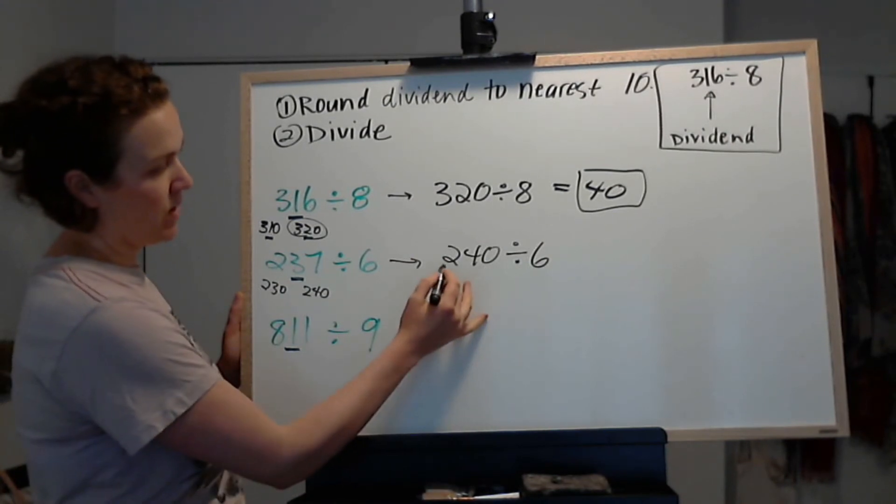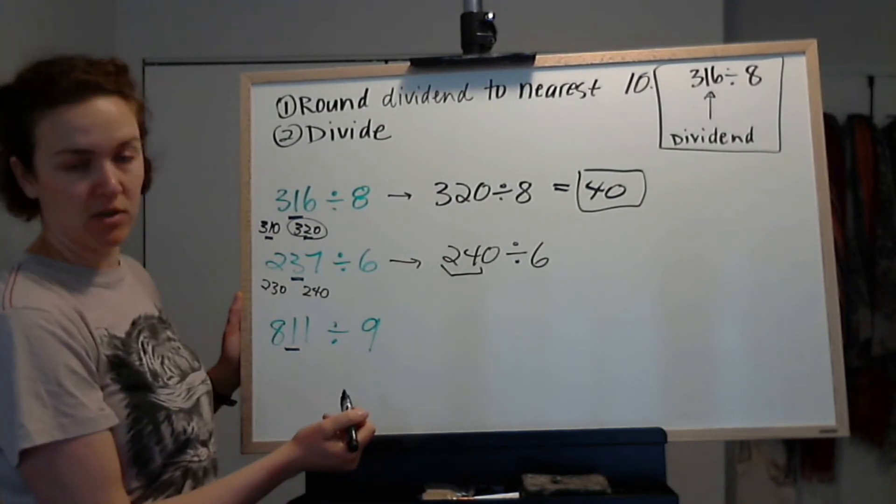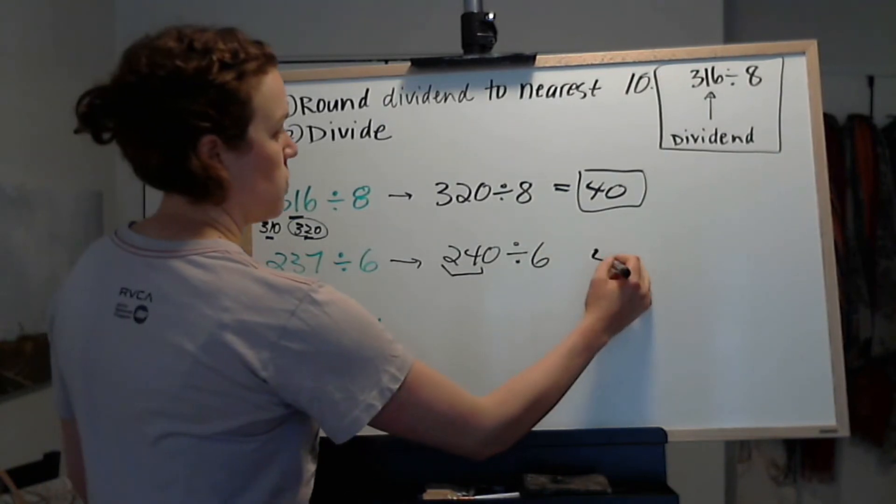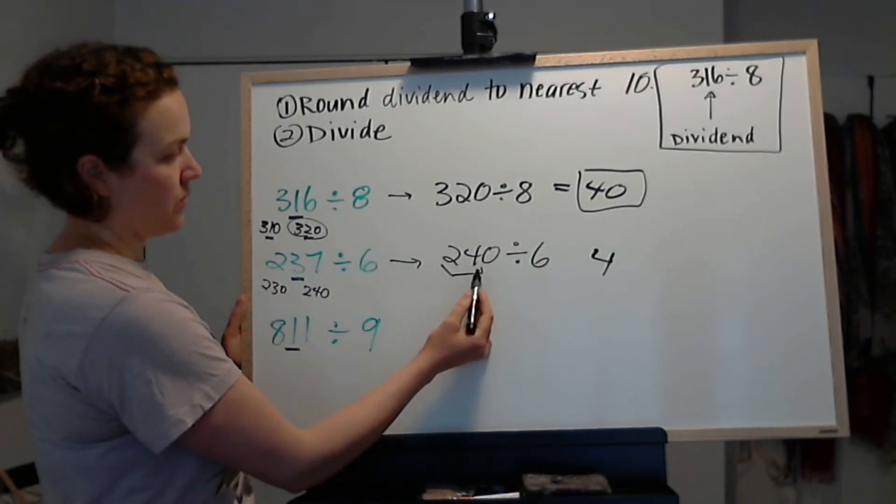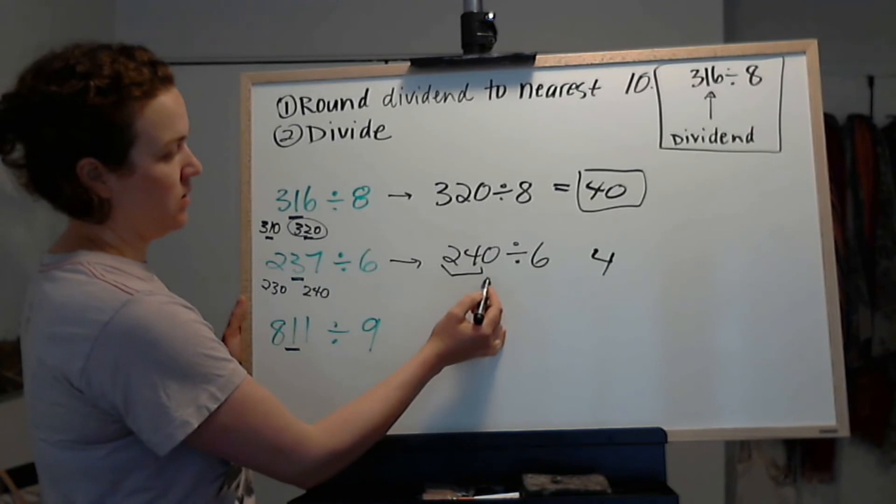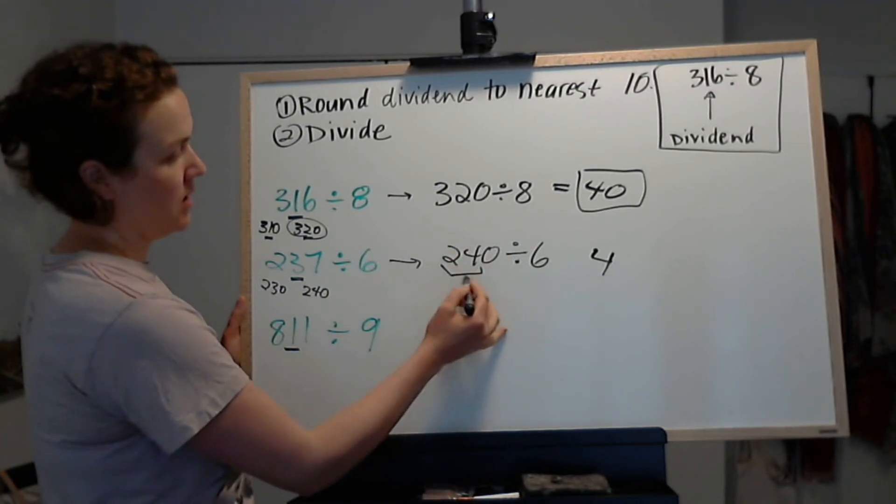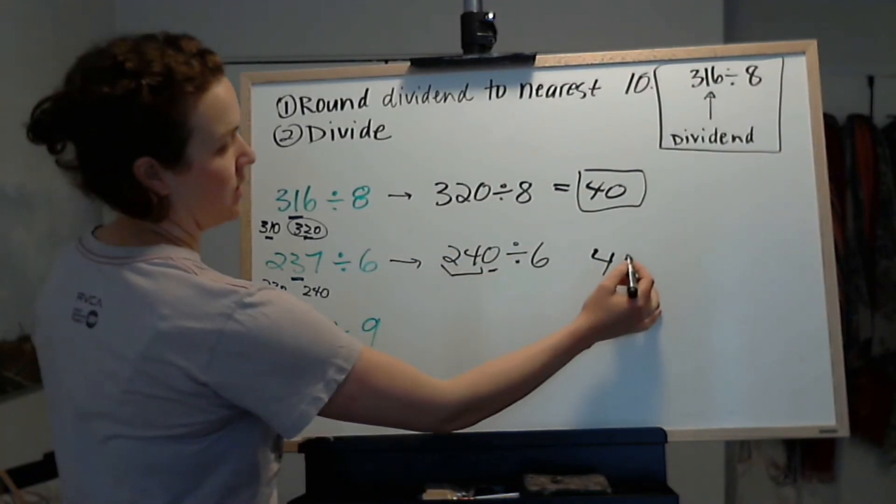Again just think about 24 divided by 6 first, which is 4. Oh, it's 40 again. And the dividend is multiplied by 10, so the answer is multiplied by 10.